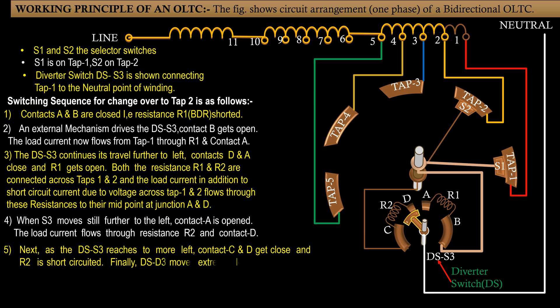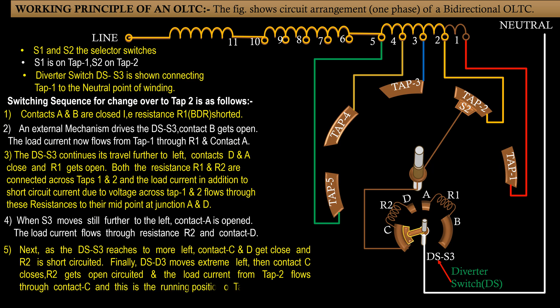Step 6: Finally, DSH3 moves extreme left, then contact C closes and R2 gets open. The load current from tap 2 flows through contact C and this is the running position of tap 2.